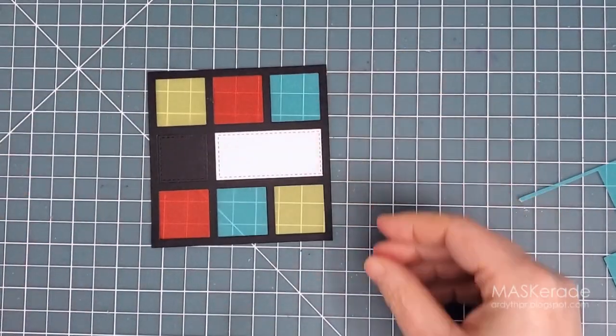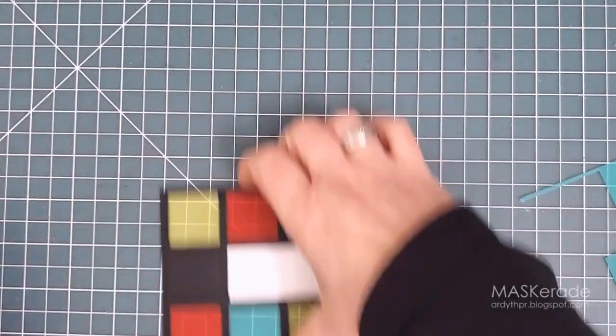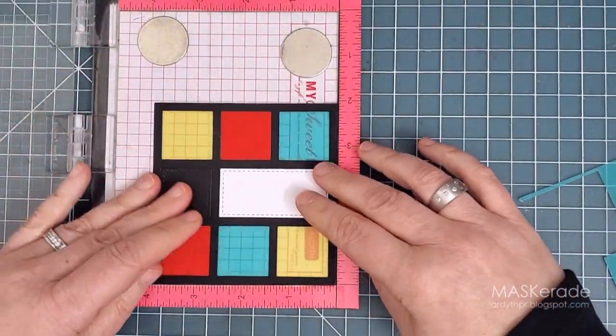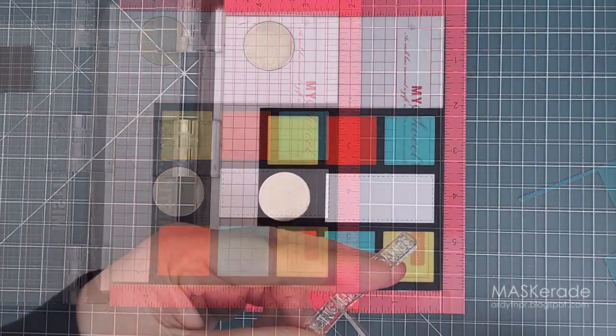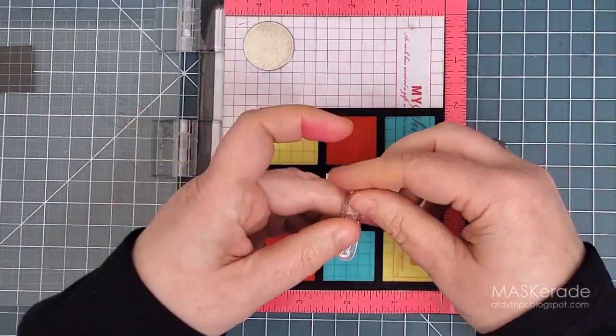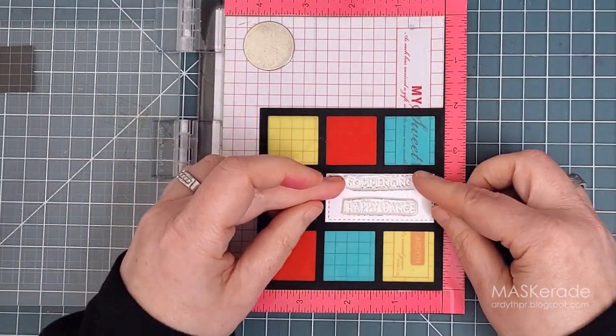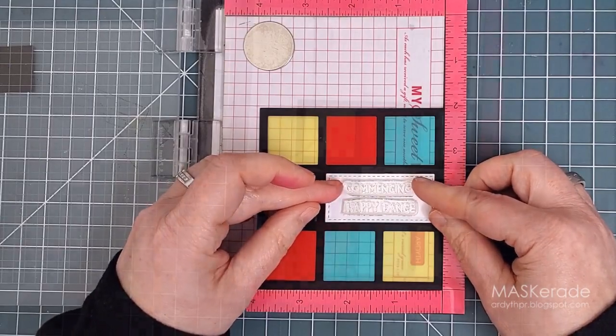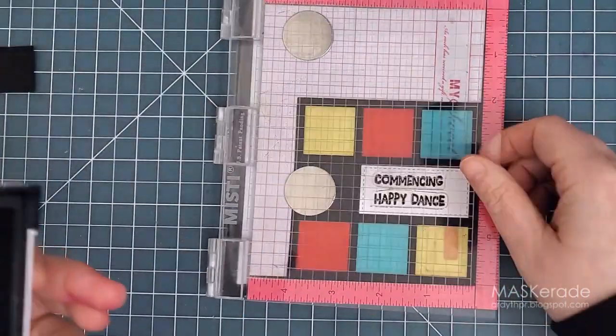So here's my dance floor and I'm going to stamp my sentiment before I go any further. I used this commence the happy dance sentiment from MFT's Party Penguins. I had to cut it to fit in my white rectangle panel and then I used my mini MISTI and Versafine Onyx ink to stamp it.